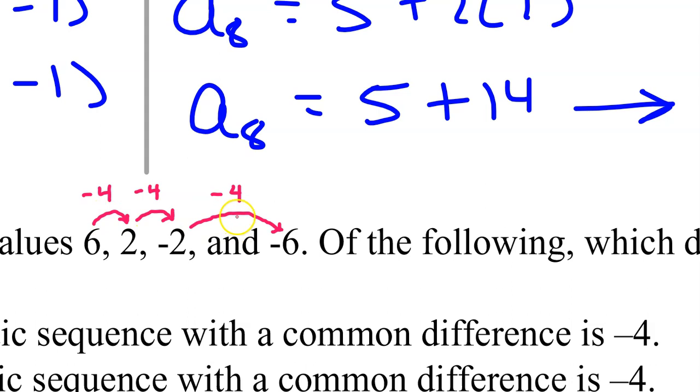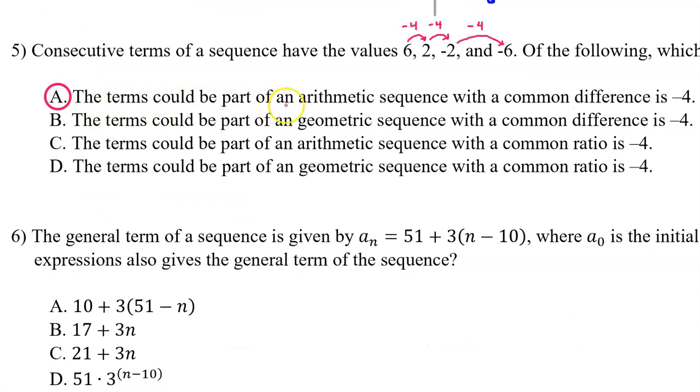So, there is a common difference of negative 4 between successive terms. Therefore, the terms could be part of an arithmetic sequence with a common difference of negative 4. And the answer is A.